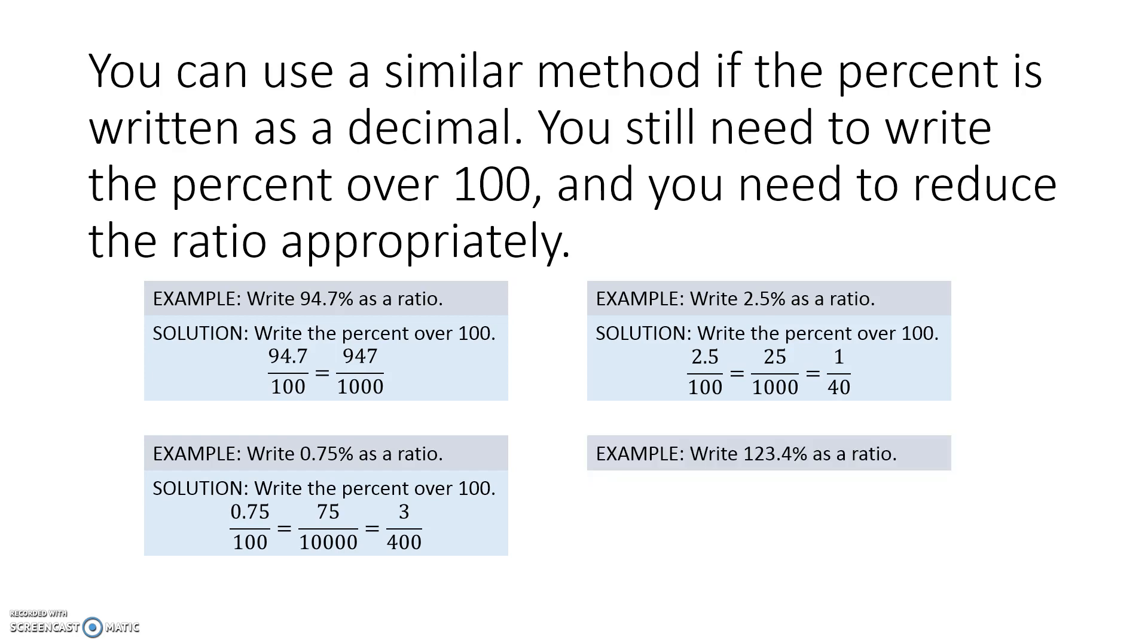Finally, what happens if your decimal is over 100? 123.4% as a ratio. We do exactly the same steps. We write 123.4 over 100, and appropriately reduce the ratio. Move the decimal one place to the right, because there's one decimal place in the numerator. We get 1234 over 1000, and we reduce that particular ratio appropriately. It gives us 617 to 500.